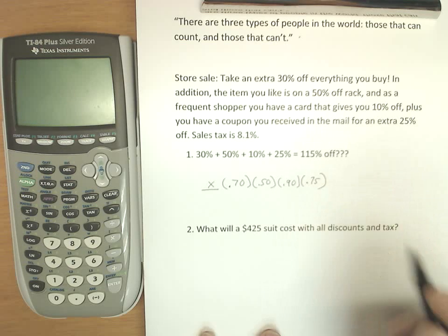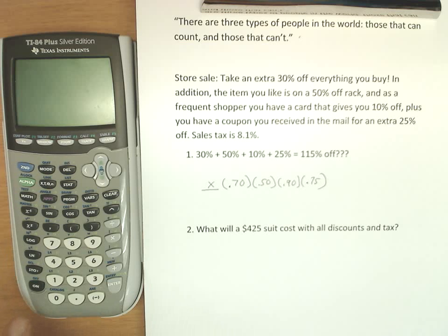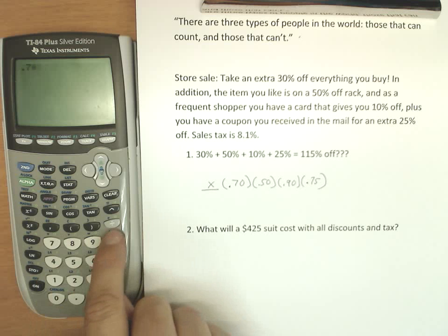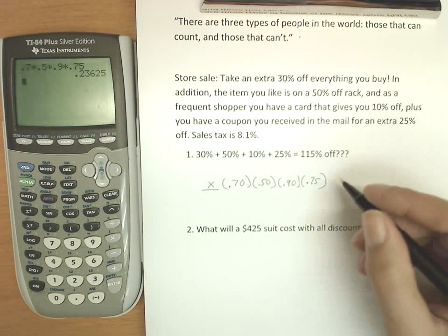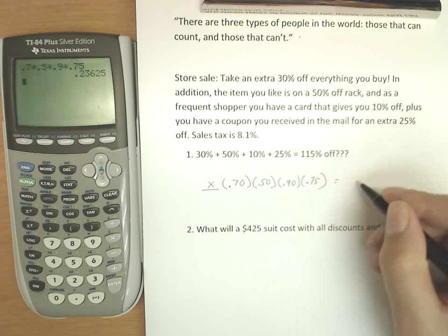And of course, it's not going to be free. So 0.7 times 0.5 times 0.9 times 0.75, and I get 23.625%, which is a pretty remarkable change.